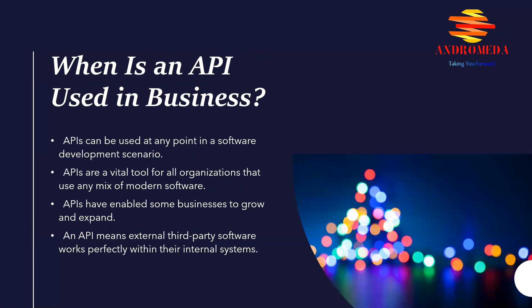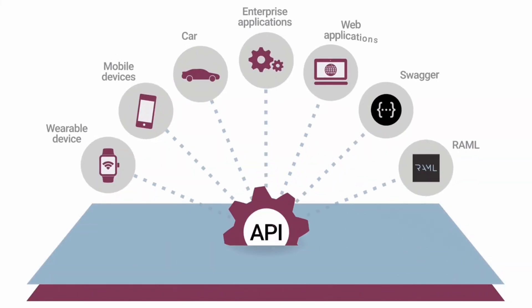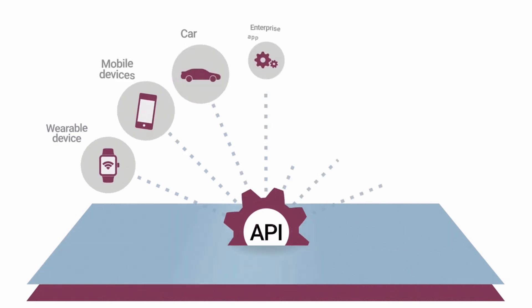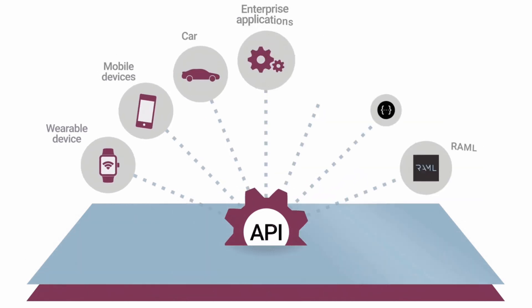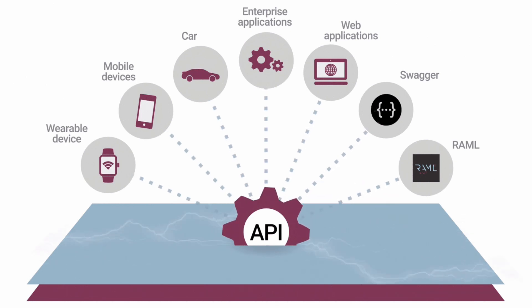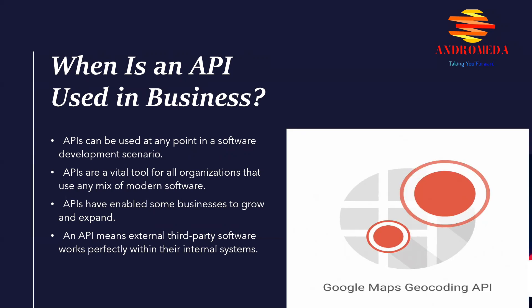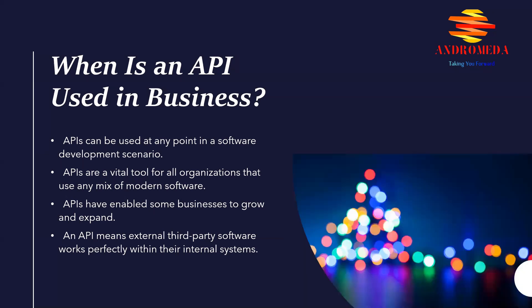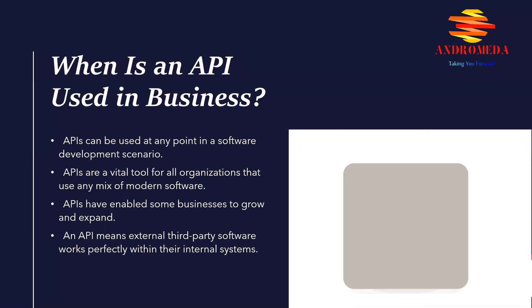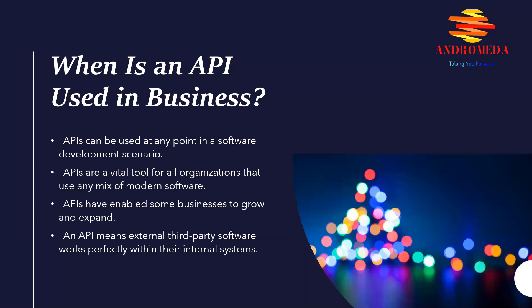So when is an API used in a business? APIs can be used at any point in the software development scenario, such as when two different systems need to access each other or when an external piece of software needs to be joined to an existing system. APIs are a vital tool for all organizations that use any mix of modern software. For example, a company website will use an API to link between an embedded Google Map on the about us page and Google Maps itself. A company embeds Google Maps on its website to help readers find the nearest branch locations — this is accomplished by the company consuming Google's public APIs.